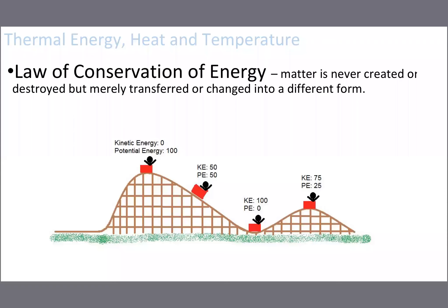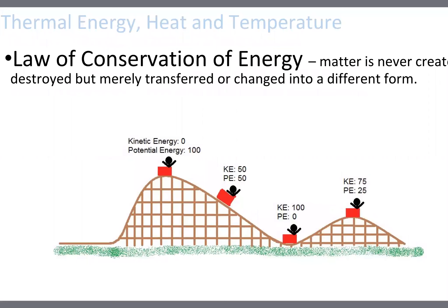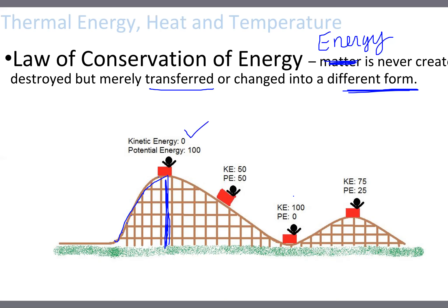Let's look at how potential and kinetic energy work together to obey the law of conservation of energy. Energy is never created or destroyed — it's only transformed or changed into a different form. The best example is a roller coaster. At the very top of the first hill you're moving slowly, and when you stop at the top, your kinetic energy is zero because your speed is zero, but you're high above the earth so you have lots of gravitational potential energy.